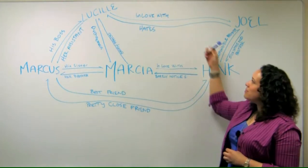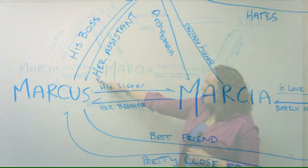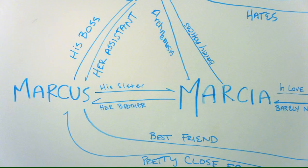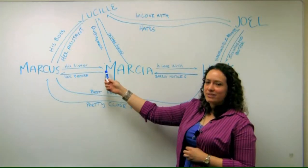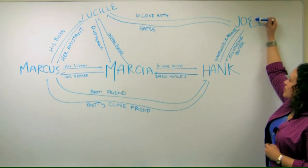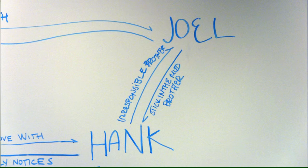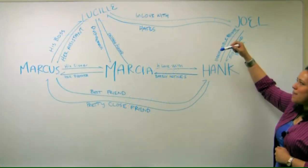Now you have the other characters in the movie throughout. Like here, we have Marsha's brother Marcus, and that's just the relationship they have — it's her brother, his sister. Over here though with Hank, we also have his brother Joel. And because it's a more interesting relationship, he has an irresponsible brother Joel, and Joel has a stick-in-the-mud brother Hank. So you just kind of begin to map that out.